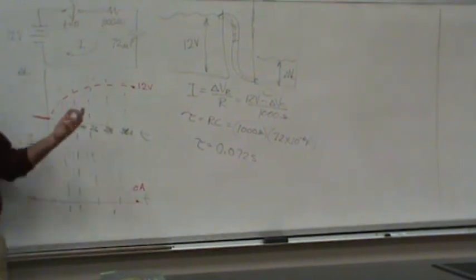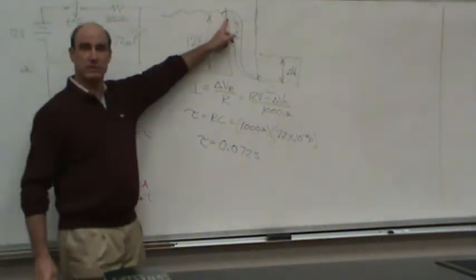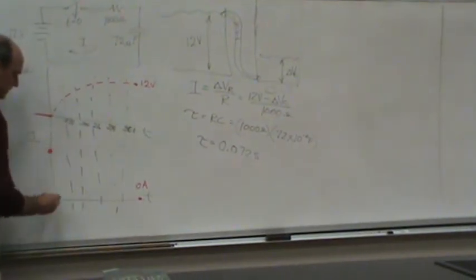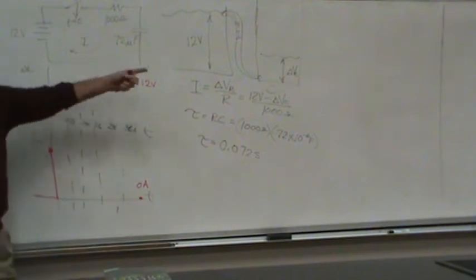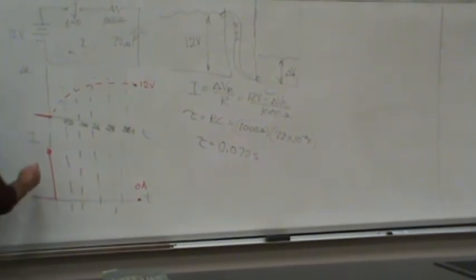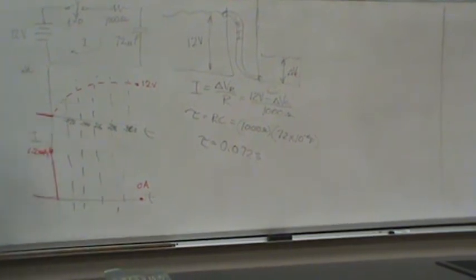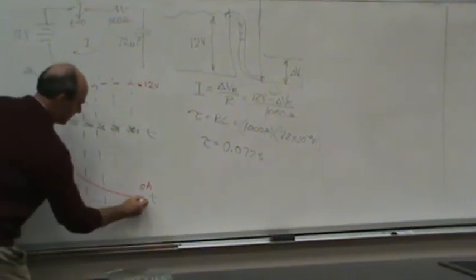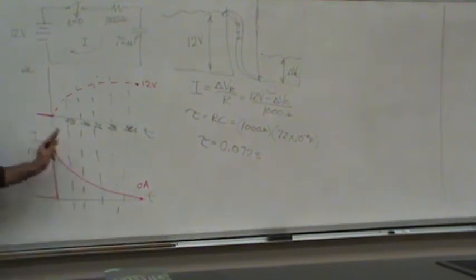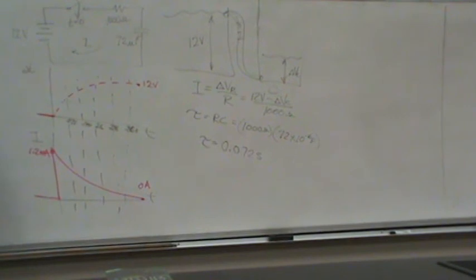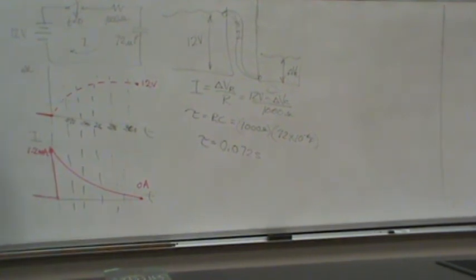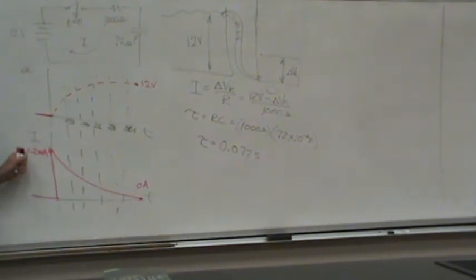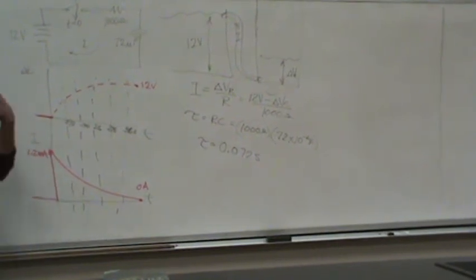So what's the maximum I? Well, that's when you first turn this on, you have 12 volts here, you have no volts here. So that's the maximum current that can flow. So this will instantly jump up to 12 volts divided by 1,000. 1.2 milliamps. Okay. And then it would drop down. I divided 12 volts by 1,000 ohms.